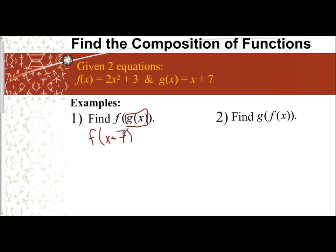That means wherever I see my variable x in f, instead of x, I'm going to put x + 7. So f(x) is 2x² + 3, but instead of x squared, I'm going to do 2 times (x + 7) squared, plus 3.